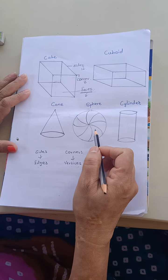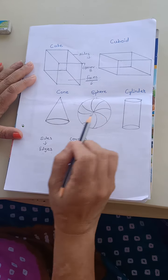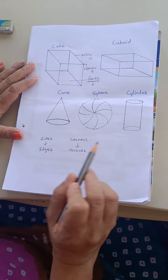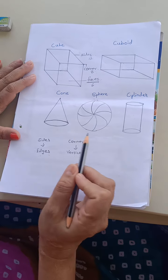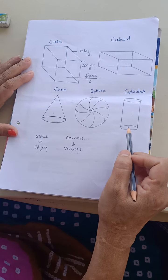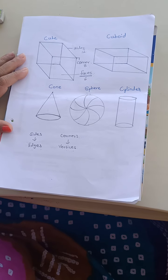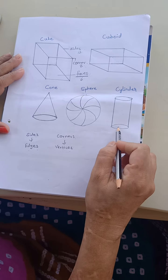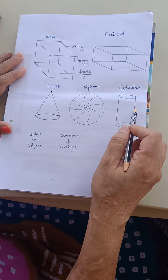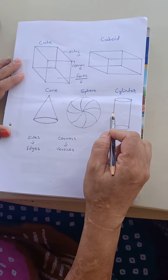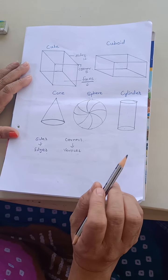The next shape is sphere. Sphere has got no vertices, no edges. It has got only one curved face. Next shape is cylinder. Cylinder has got 3 faces — one at the bottom, one at the top, which are flat, and one curved in the middle. So it has got 3 faces, no edges, no vertices.